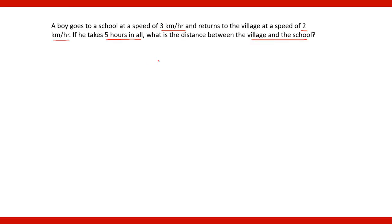A boy goes to a school from his village, V is a village and S is a school. One boy goes from his village to the school at 3 km per hour speed and returns with a speed of 2 km per hour. For this journey, he takes total time as 5 hours, and you have to find the total distance.